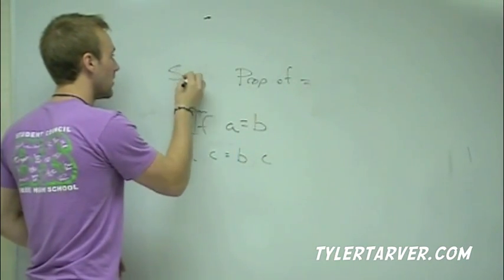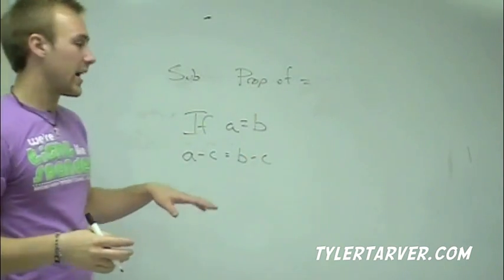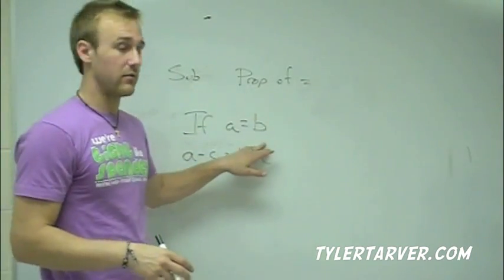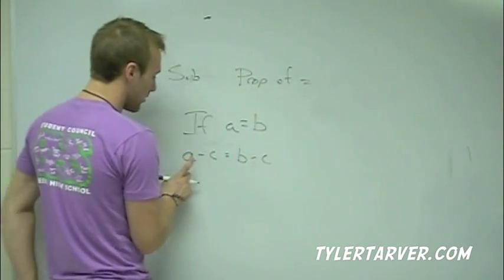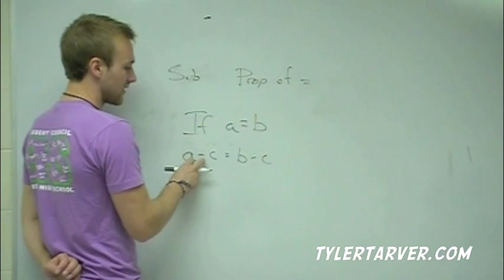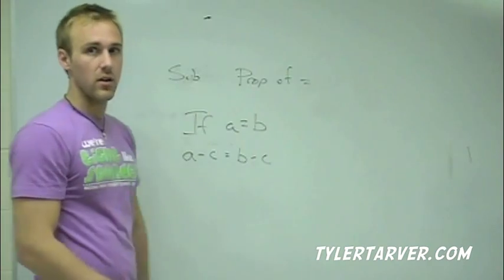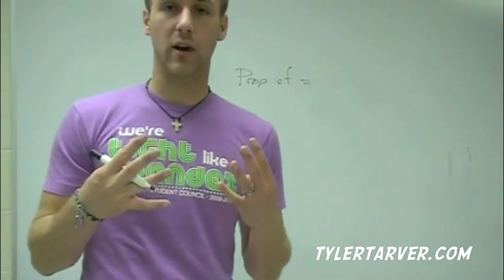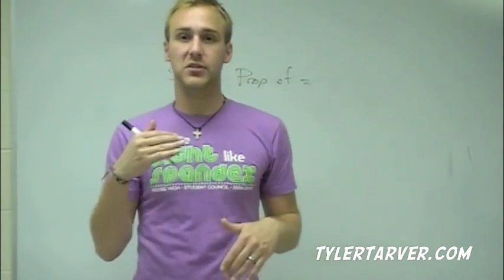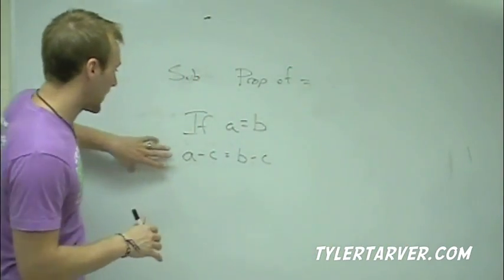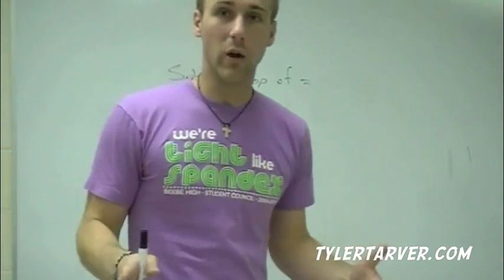The Subtraction Property of Equality is the same thing except you're taking away. Say seven equals seven — that's true. If c is three, then seven minus three here and seven minus three there both give you four. So subtraction property means they're still equal as long as you subtract from both sides of the equal sign.